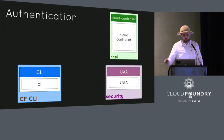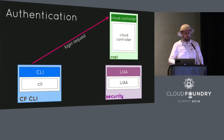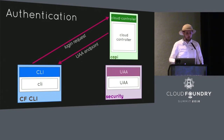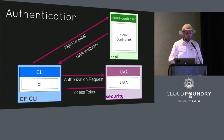Let's take a look at this workflow. It's quite straightforward: we send a login request from the CLI to the Cloud Controller, we get back the UAA details of where to authenticate against, then we send an authorization request to the UAA, and we get back an access token.